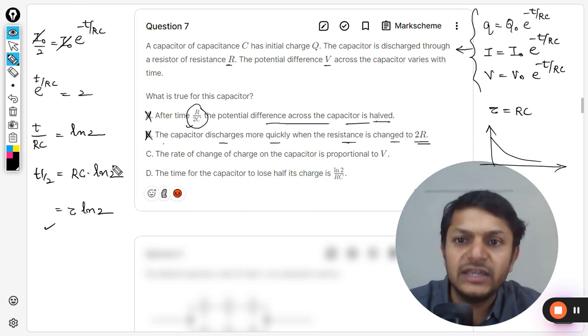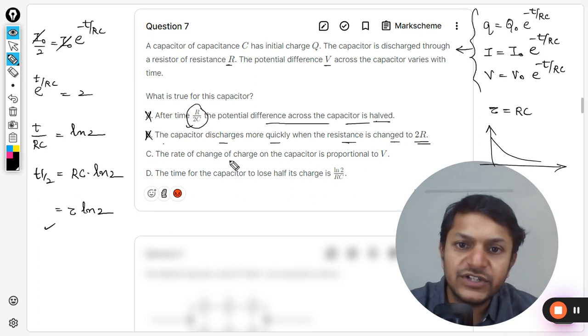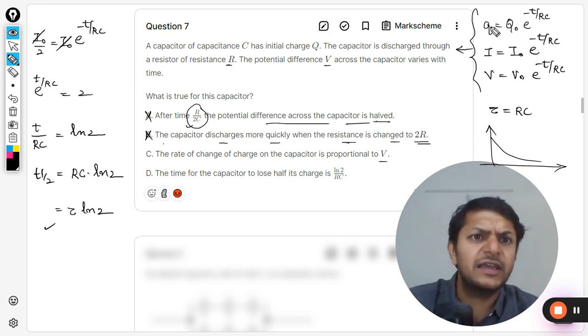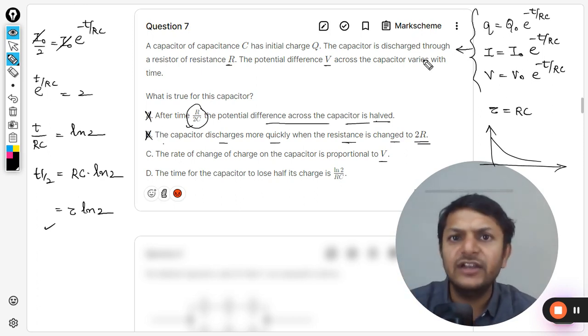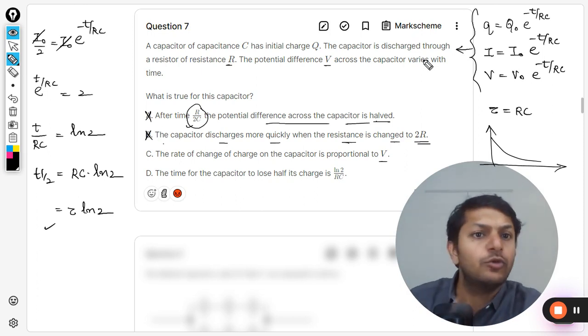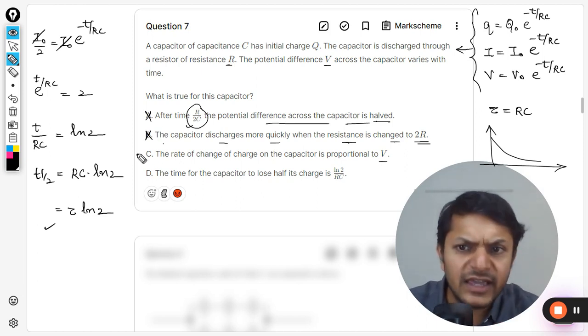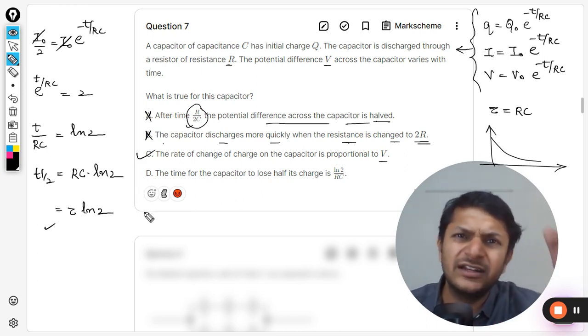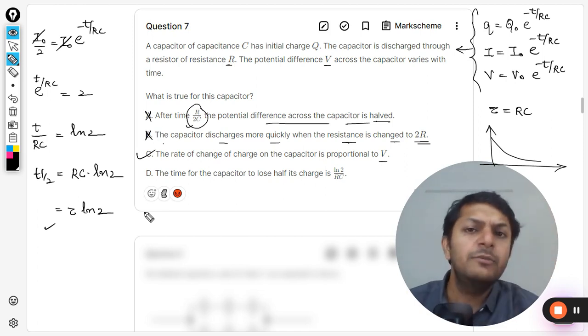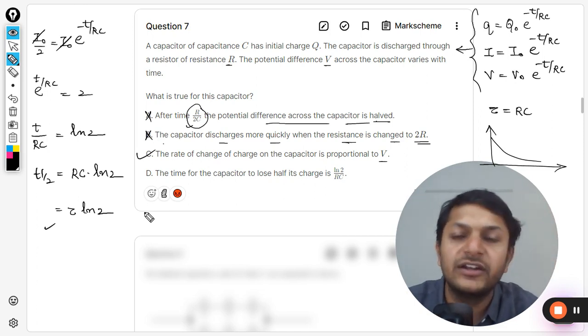C: The rate of change of charge on the capacitor is proportional to V. Well, clearly we can say that because all of these variations are the same. Q, I, and V, definitely we can say they are proportional to each other. More is the Q, more will be the current, more will be the V because they are actually dependent on time. As the time increases, all of them are having the same variation, they are decreasing. So C can be taken as a correct answer, although I don't see that there is any direct relation between them, but graphically we can say that they are definitely directly proportional to each other.